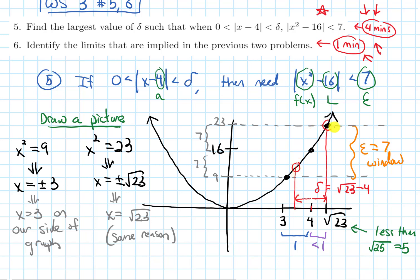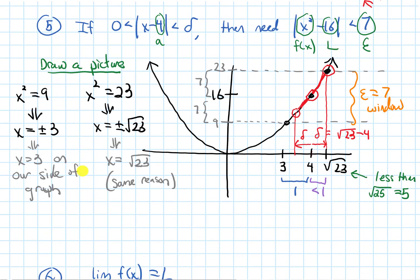I put open circles at both of these because the distance between x and 4 is less than delta. It cannot be equal to delta. Then I start to shade all of this stuff in, but I leave an open circle at the point where x is 4 because the distance between x and 4 has to be greater than 0. It cannot be equal to 0. All right, let me label this arrow's distance as delta as well. So let's write down that largest delta. The largest that delta can be is root 23 minus 4.